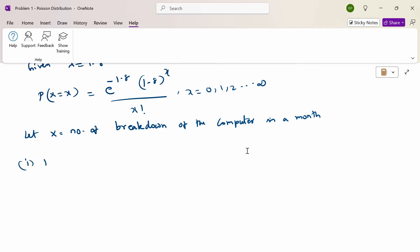Now first question: probability without breakdown. See here, x is number of breakdowns. The question is without breakdown. Without breakdown means no breakdown, so x is 0.